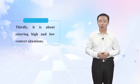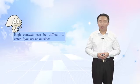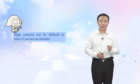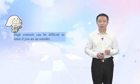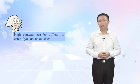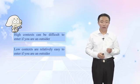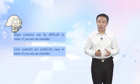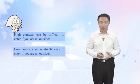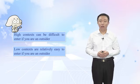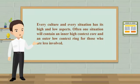Thirdly, it is about entering high and low context situations. High context can be difficult to enter if you are an outsider because you don't carry the context information internally, and because you can't instantly create close relationships. Low context is relatively easy to enter if you are an outsider because the environment contains much of the information you need to participate, you can form relations fairly quickly, and because the important thing is accomplishing a task rather than fitting into a relationship. Remember that every culture and every situation has its high and low aspects.